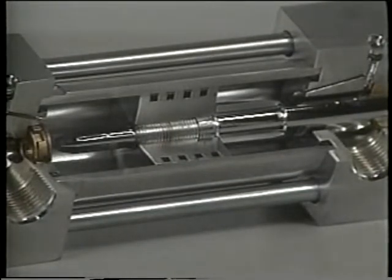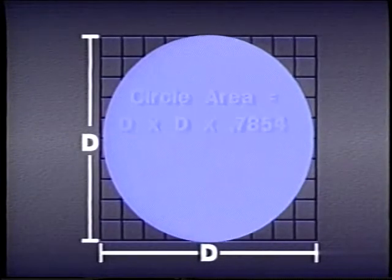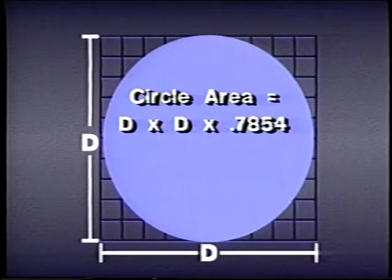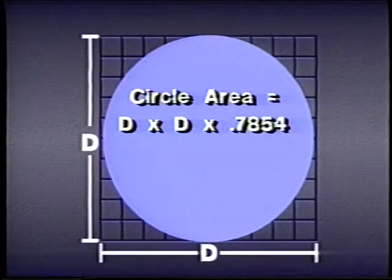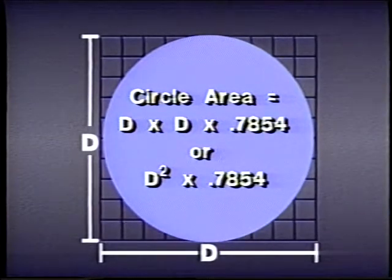Finding the area is easy. The area of any circle is just slightly more than three-quarters the size of a square with sides the same length as the diameter of the circle. Actually, the circle encloses .7854 of the area of the square. To find the area of a circle or a piston, we use the formula: circle area equals diameter times diameter times .7854, or d squared times .7854.